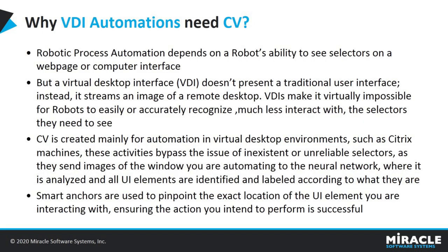Let's see why VDI automations need CV. CV is useful for automating virtual desktop environments to solve the selectors issue. First, images of the window being automated are sent to the neural network, where the window is analyzed and all UI elements are identified individually. Then, by use of smart anchors, the exact location of each UI element is found. In this way, robots can accurately recognize selectors for VDI environments.